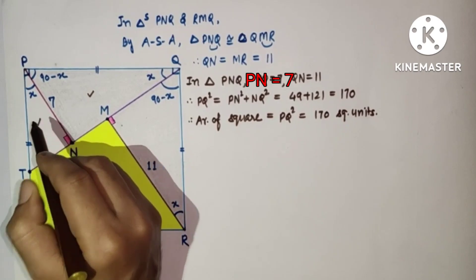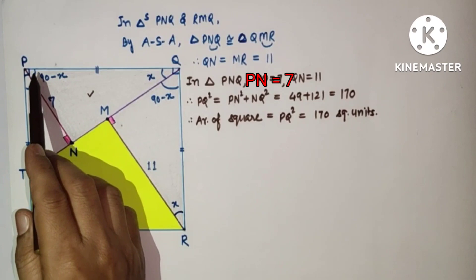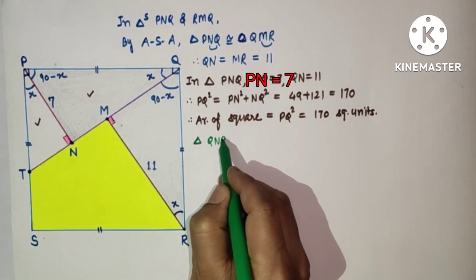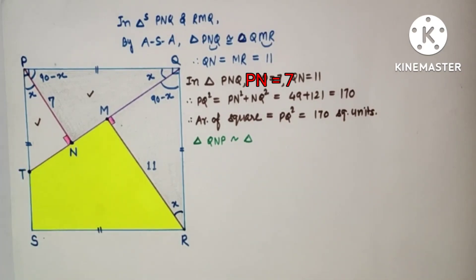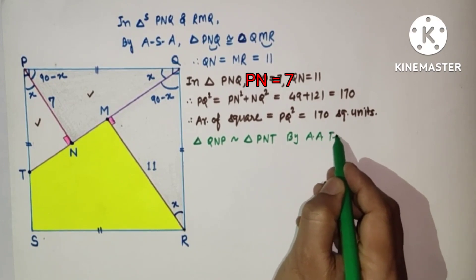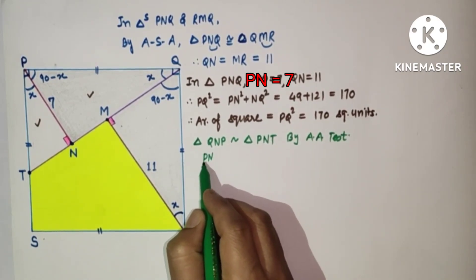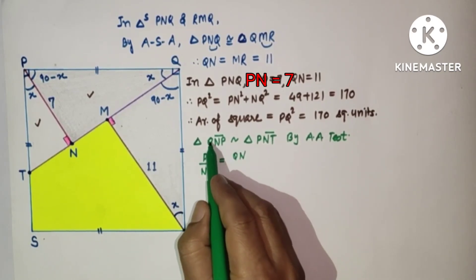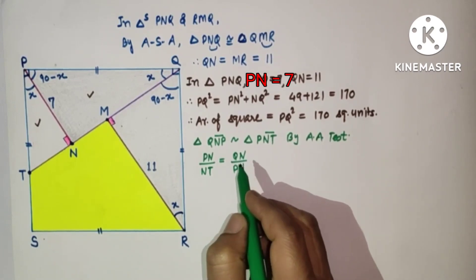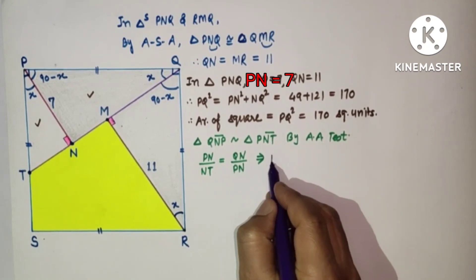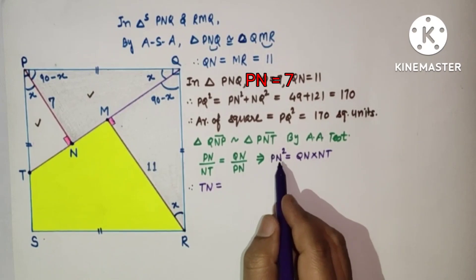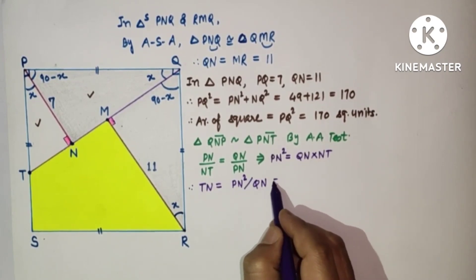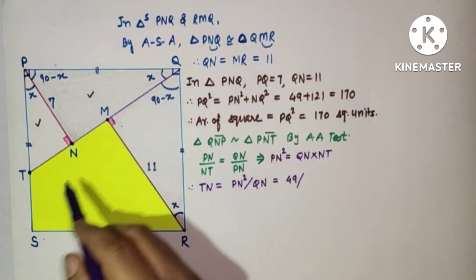Now these two triangles are similar by AA test. This is 90 minus x, this is x, this is 90 minus x — triangle QNP is similar to triangle PNT by the AA test of similarity. Therefore PN divided by NT equals QN divided by PN. This gives PN² equals QN times NT, so TN equals PN² divided by QN, which is 7² divided by 11, giving TN equals 49 by 11.